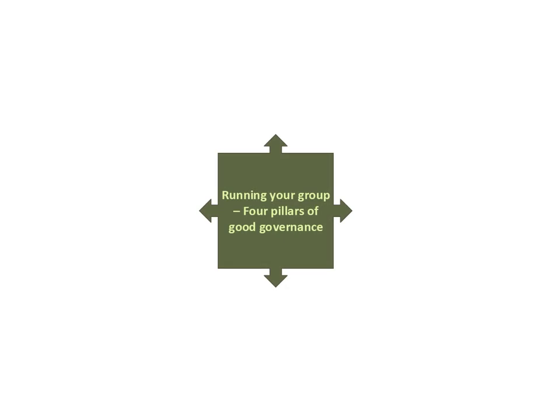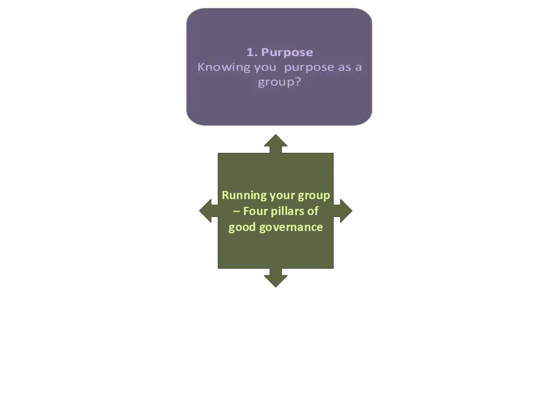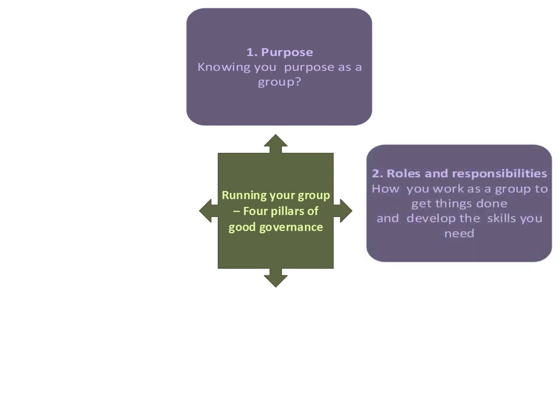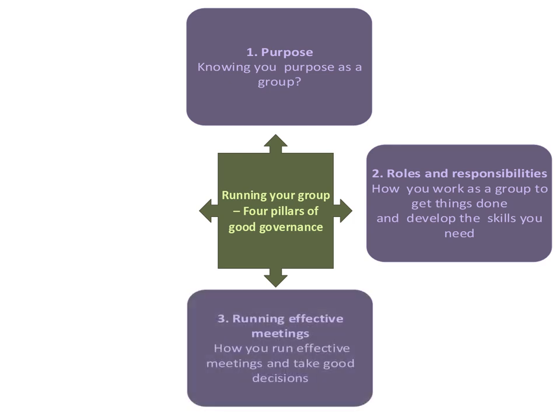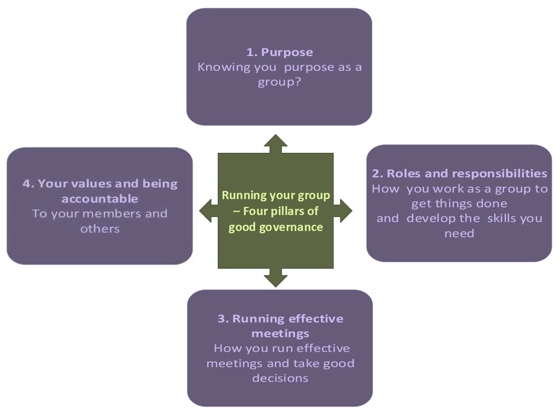It can be helpful to think of running your group in terms of four pillars of good governance, which are the focus of this module. Firstly, purpose — having a clear purpose and shared understanding of the reasons why your group exists. Secondly, having clear roles and responsibilities and the skills you need to carry these out. Thirdly, being able to run effective meetings, work well together, and take good decisions. And lastly, that your work is based on your values — the things you believe are important in how you carry out your work — and also that you're accountable to your members and able to take responsibility for the group's decisions and actions. All four of these areas are covered in more detail in this module.